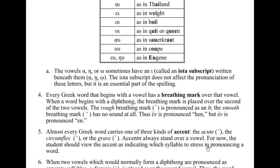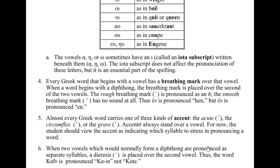The vowels alpha, eta, or omega sometimes have an iota written beneath them — it's called an iota subscript. The subscript does not affect the pronunciation of these letters, so they're still pronounced A, A, and O, but the iota subscript is an essential part of the spelling.